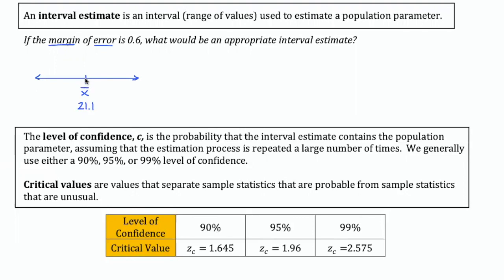The actual population mean is probably going to be some other number. The margin of error establishes the boundaries for our estimate. So if the margin of error is 0.6, that's saying that this estimate — 21.1 — could be off by as much as 0.6 units. So we're going to add 0.6 to 21.1, which gives us 21.7. If 0.6 is the margin of error, the largest the population mean might actually be is 21.7.